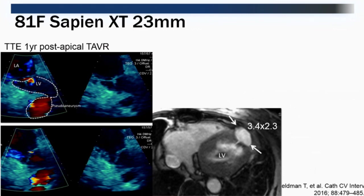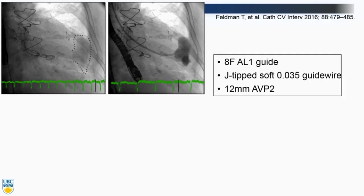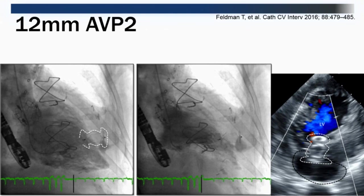One such example was published by Ted Feldman: an 81-year-old after a Sapien XC 23 mm valve. A transthoracic echo a year later showed a pseudoaneurysm; on MRI it measured 3.4 by 2.3 cm with a narrow neck. Under GA with TEE guidance, they crossed the aortic valve with an 8 French AL1 catheter and a J-tip soft wire, placing a 12 mm Amplatzer Vascular Plug 2 (AVP2). Post-procedure echo showed no color flow across the pseudoaneurysm.